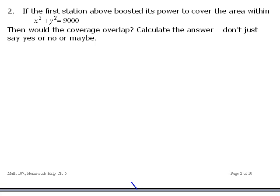And this is the same problem again, except the first station, the one at the origin, has boosted its power to 9,000. Be sure to take the square root using the calculator for that. I'm going to draw these three cases again, so maybe you can kind of see what's going on here better.